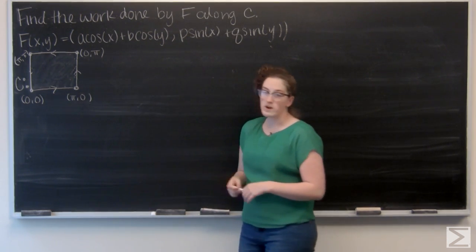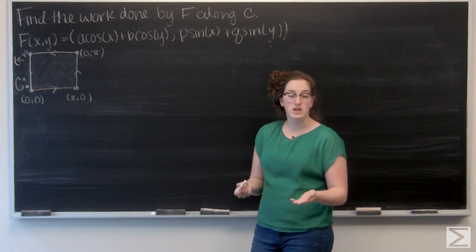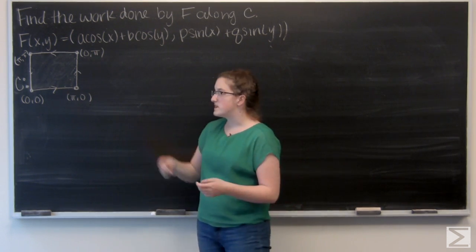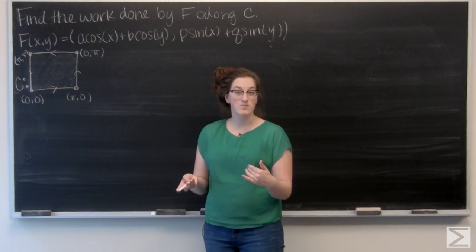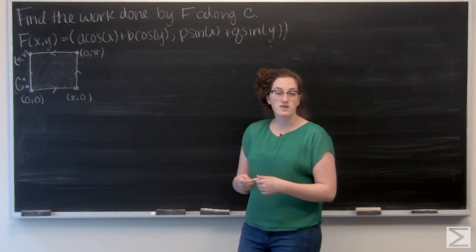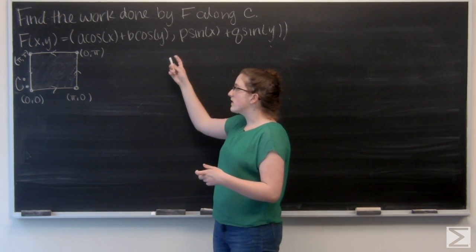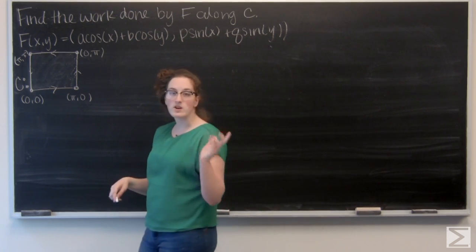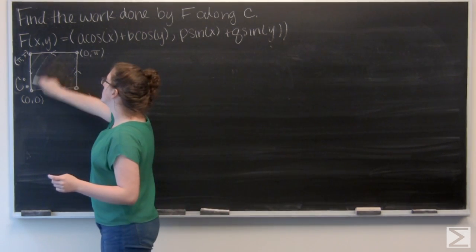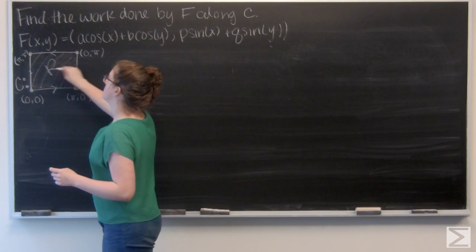So to find the work done by our vector field, I want to take a line integral of it around the curve C. And since C is closed, its start and end point are the same, I can use Green's theorem. And Green's theorem is integrating the two-dimensional curl of F over the region that the curve C encloses, so this region R.